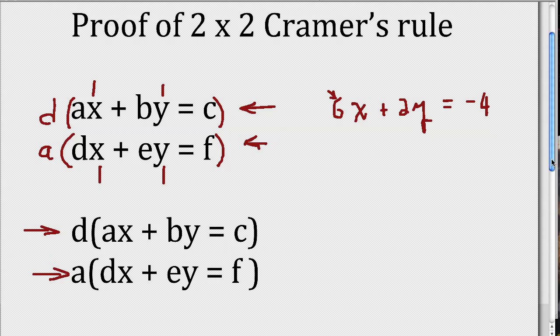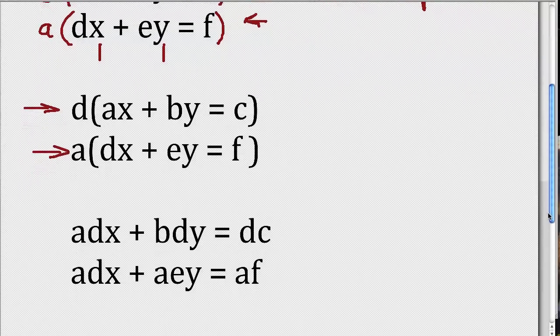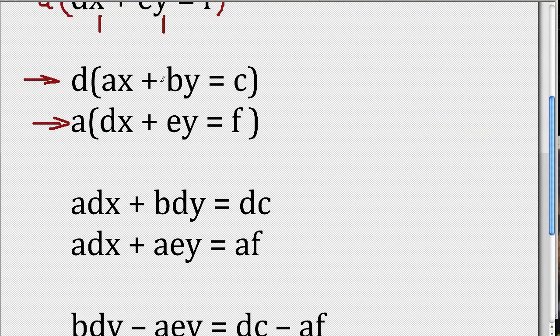So now I multiply through, on the top I multiply through by the D, so distributing it into the parentheses, I get D times AX, that's ADX, plus D times BY, but that's the same thing as BDY. So D times BY up here is the same thing as BDY, and then that equals D times C, which is DC.